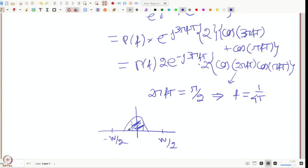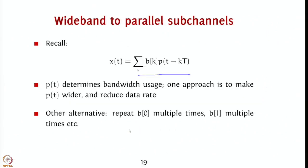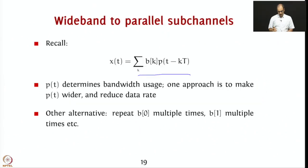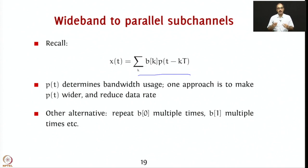This is the key idea: we are repeating b_0 multiple times, b_1 multiple times, say K times. This method flattens the channel in the sense that the frequency spectrum usage becomes much narrower. However, one issue is that you have essentially made the data rate 1/K times. Earlier you are sending one symbol every T seconds, now you are sending one symbol every KT seconds. This is not the best approach to take. So what is the better approach?